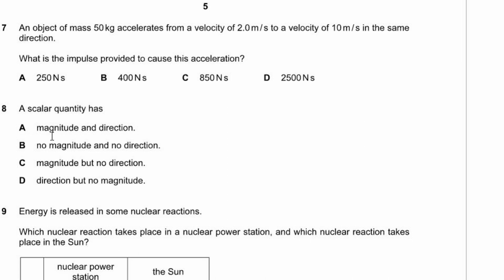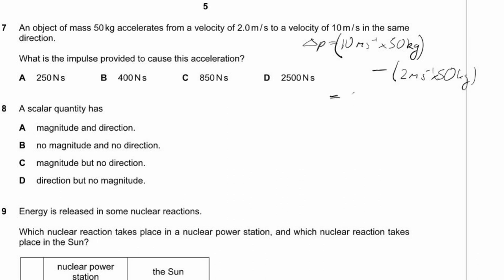Question 7. An object of mass 50 kg accelerates from 2 m/s to 10 m/s. What is the impulse? Impulse equals change of momentum: (50 × 10) minus (50 × 2) = 500 minus 100 = 400 newton seconds. Answer B.